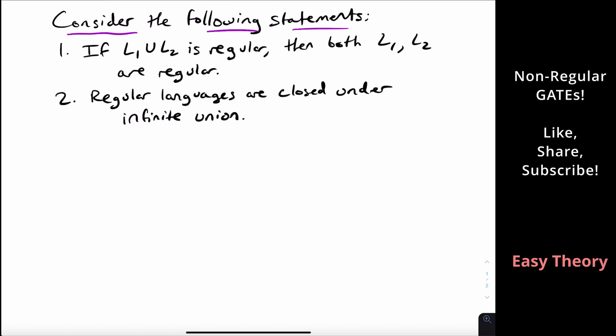The first one says if we have two languages and their union is regular, then both of the original languages are regular. And the second statement is regular languages are closed under infinite union.